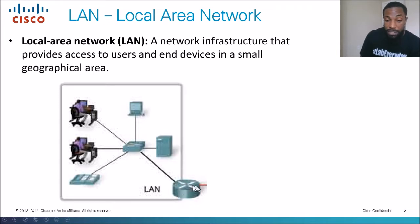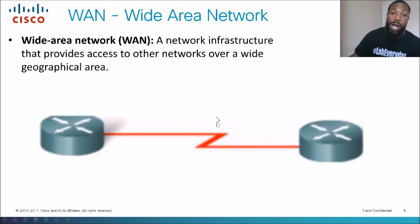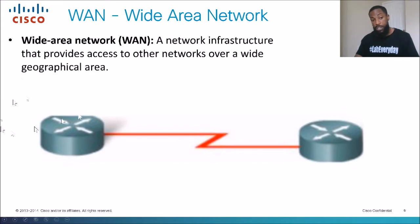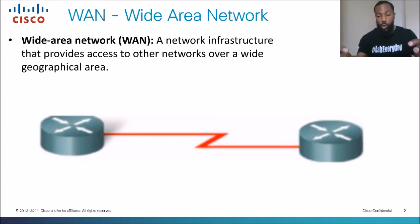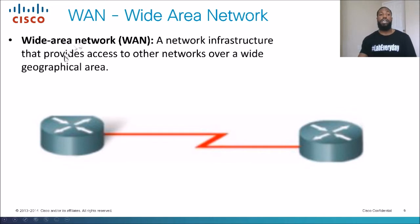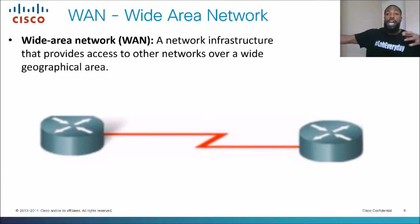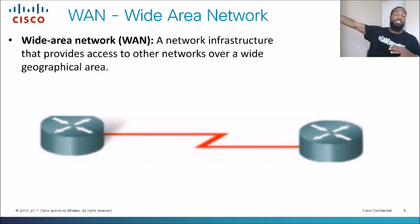The router sits at the edge of the network, and we've got this little red line that takes us out to the wide area network. The local area network will be on one side of the router. We've got a wider view of the WAN, which could be the internet or another wide area network that takes you to maybe another remote corporate office. Wide area network is a network infrastructure that provides access to other networks over a wide geographical area — a city, a continent, a county. It's larger than a LAN and constitutes hundreds or millions of routers.